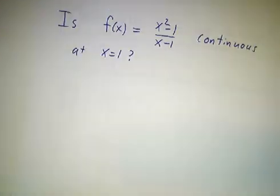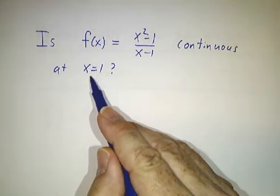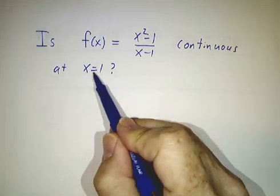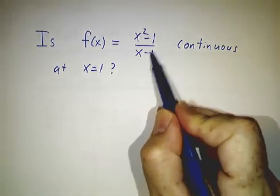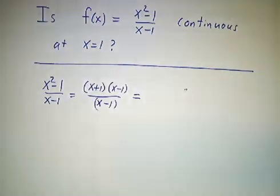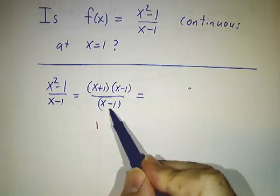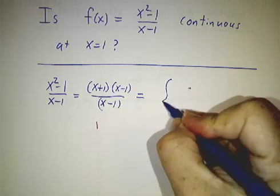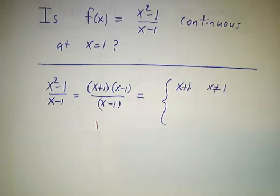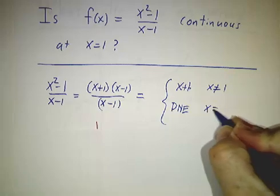So let's look at an example. Consider the function f is x squared minus 1 over x minus 1. We ask, is it continuous at x equals 1? Well, it fails the very first test. If you plug in x equals 1, you get 0 over 0. That doesn't make sense. So it's not continuous. Let's take a closer look at what this looks like. If you factor this, you get x plus 1 times x minus 1 over x minus 1. And that's x plus 1 as long as you're not canceling zeros.